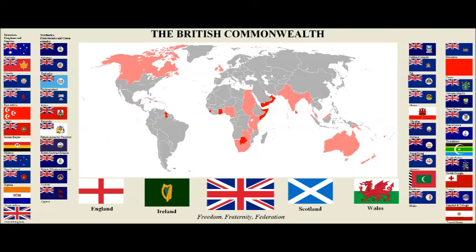Most of the nations that take part in the Games once belonged to the British Empire. Being part of the Commonwealth is voluntary. Some former colonies have made a point of withdrawing. The first country to do this was Ireland in 1949.